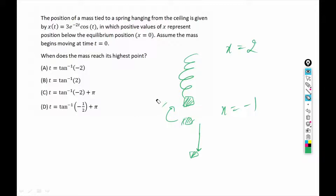Now let's read the question. Assume that mass begins moving at t equals to 0. When does the mass reach its highest point? If the mass reaches its highest point, that means x has the maximum negative value, because maximum negative value means the mass has the highest height. And maximum positive value of x means the maximum down the mass can go. So we want to find the time t where x takes its minimum value.